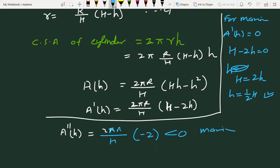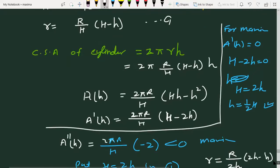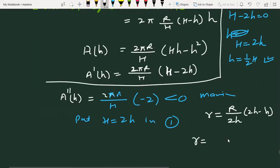Now, let's put this h value equal to H/2 in the first equation. So, here we have to show the radius. I have to show the radius of the cylinder is half the radius of the cone.